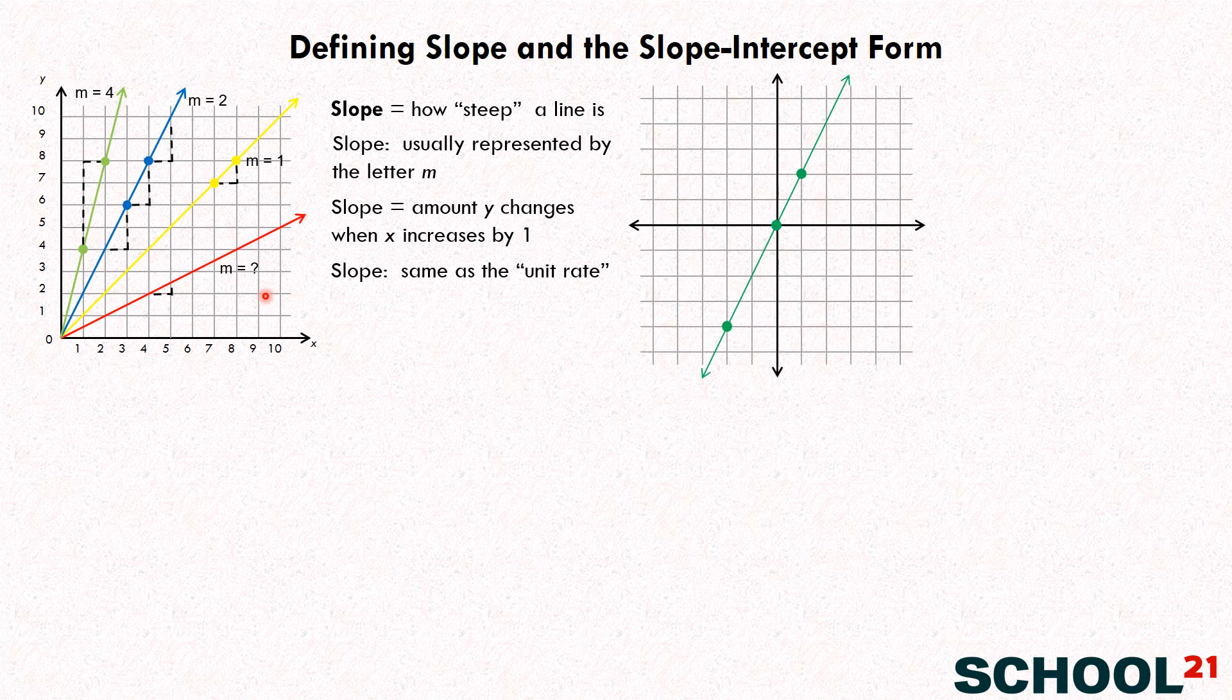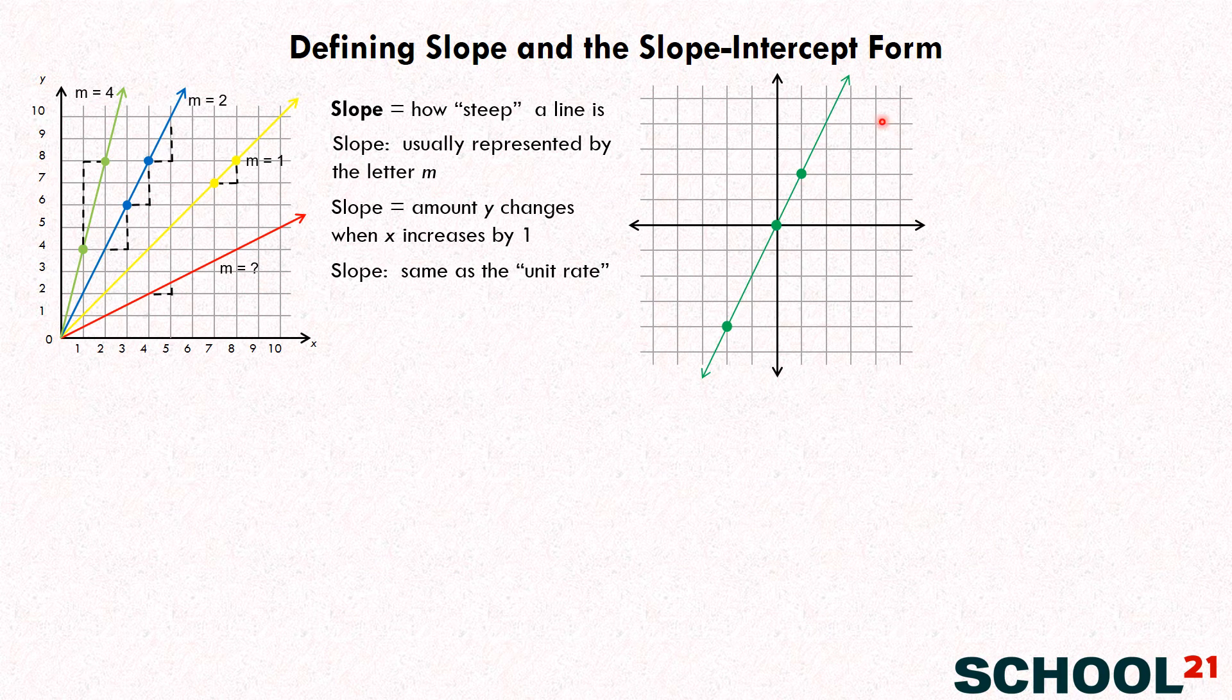So let's look at a full line over here on the full coordinate plane. We have a few points here, so let's first try to figure out what the slope is between these two points right here. So X is increasing by one, and so Y increases by how many? Two. Two. So we can go ahead and write M equals two for our slope here.